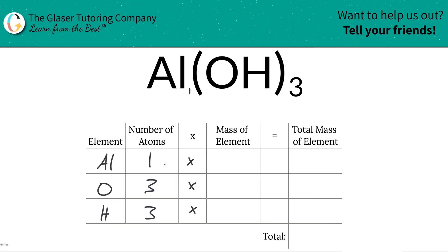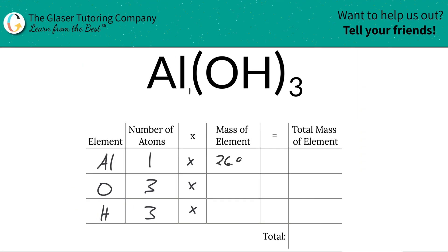So let's write them down. So aluminum is 26.98. Oxygen is about 16. And then let's make that a little neater. And then hydrogen is going to be about 1.01.